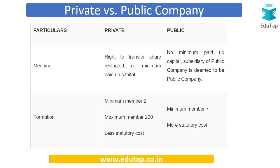Before answering, let me quickly talk about the difference between private and public companies. Public companies are the popular ones you hear of often in the news, while private companies are smaller ones set up by relatives or individuals, having just a few members and a limited area of operation. Public companies have a very wide area of operation, a large number of members, and are easily recognizable. You can identify them because a private company's name ends with 'Private Limited' while a public company's name ends with just 'Limited.'